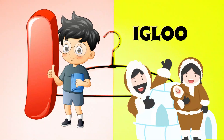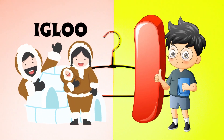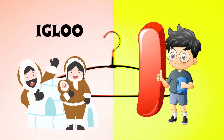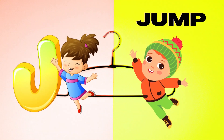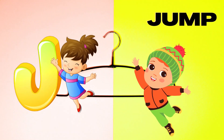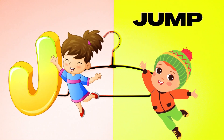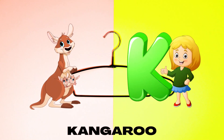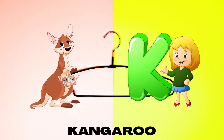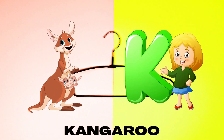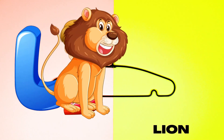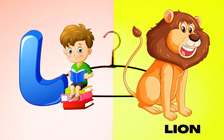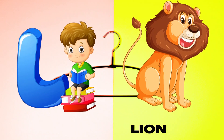I is for Igloo, I-I-Igloo. J is for Jump, J-J-Jump. K is for Kangaroo, K-K-Kangaroo. L is for Lion, L-L-Lion.